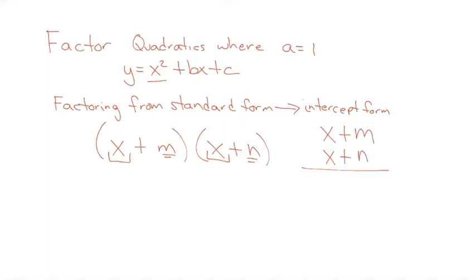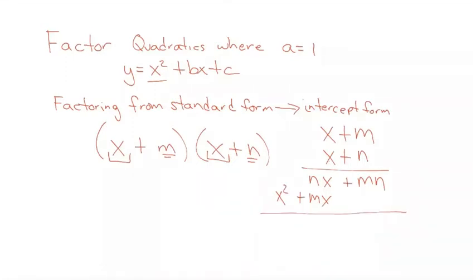When I multiply, I multiply n times each term on top: n times m is mn, and n times x is nx. Then x times m is mx, and x times x is x squared. Both middle terms have an x, so I can rewrite this as x squared plus (n plus m) times x plus mn.